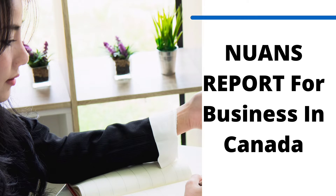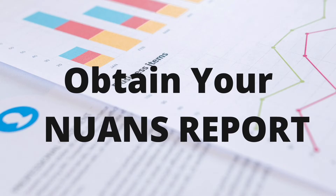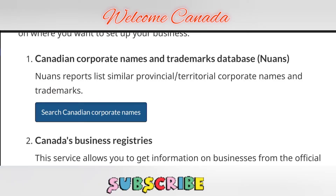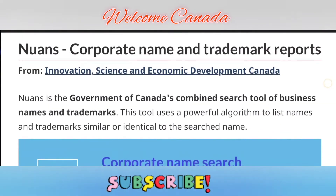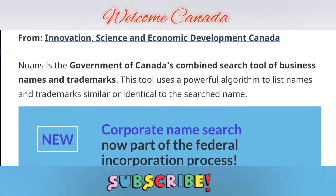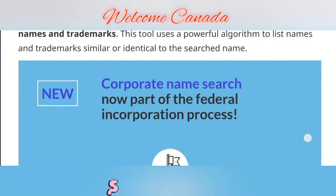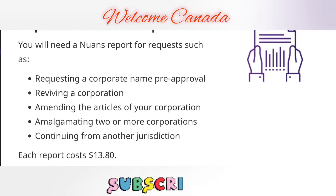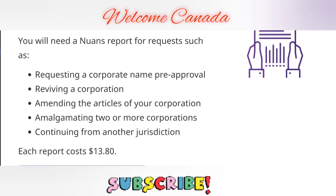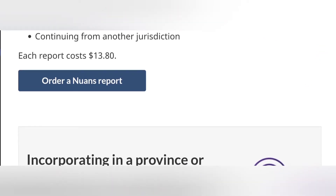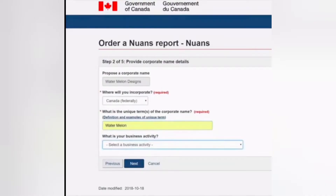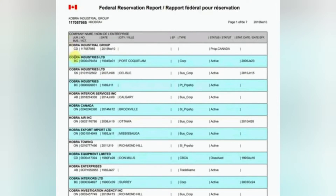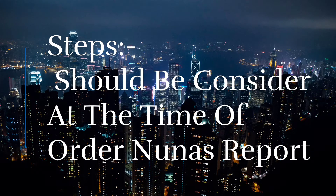One thing to keep in mind: when you register as a federal corporation, your business name is reserved across the entire country of Canada. That is one of the key benefits of the NUANS report. However, if you register under a sole proprietorship or partnership, your business name will only be reserved up to a specific province. So when you expand your business, you will need the federal corporation. It's my advice that you reserve your business under the federal corporation.